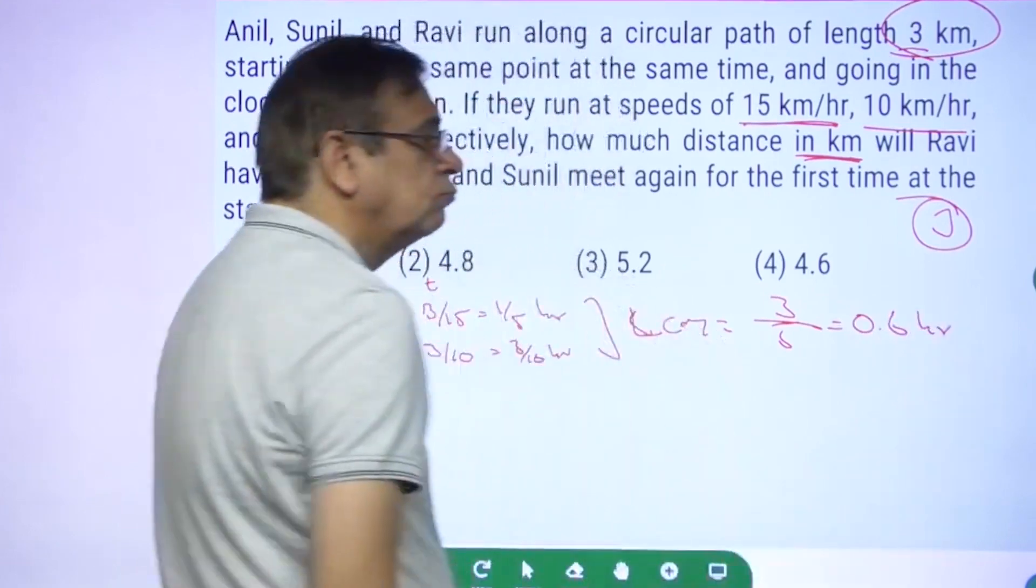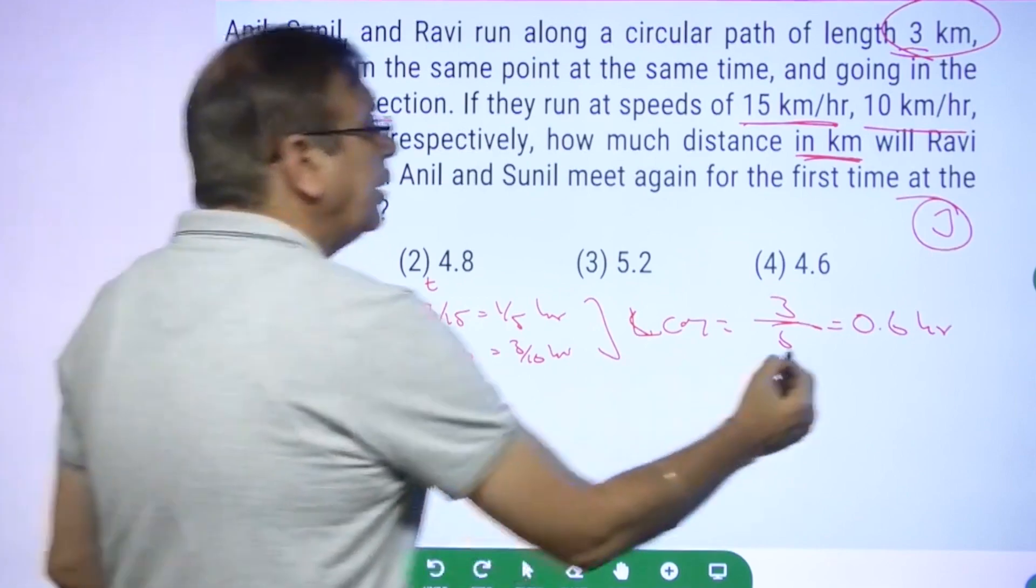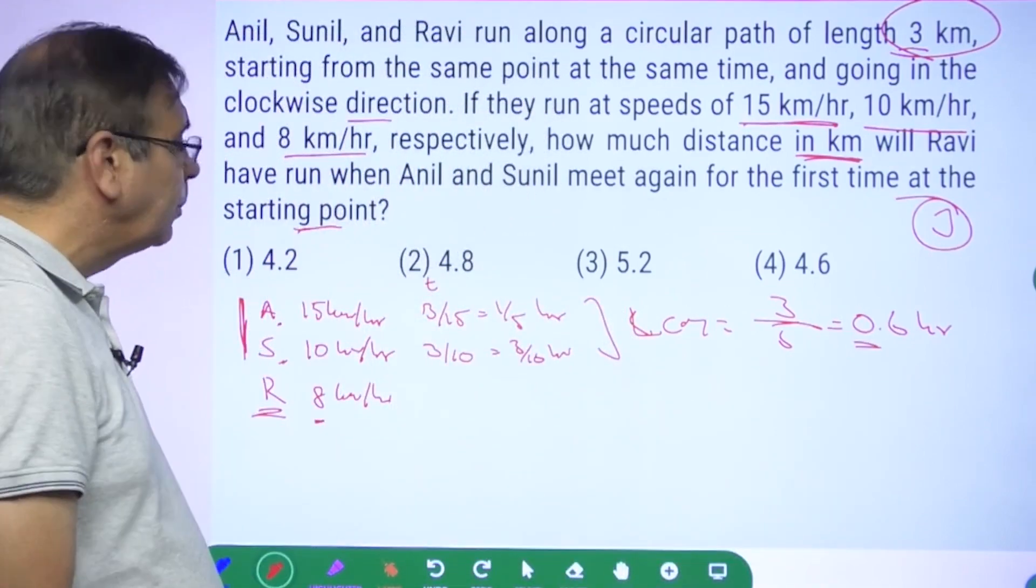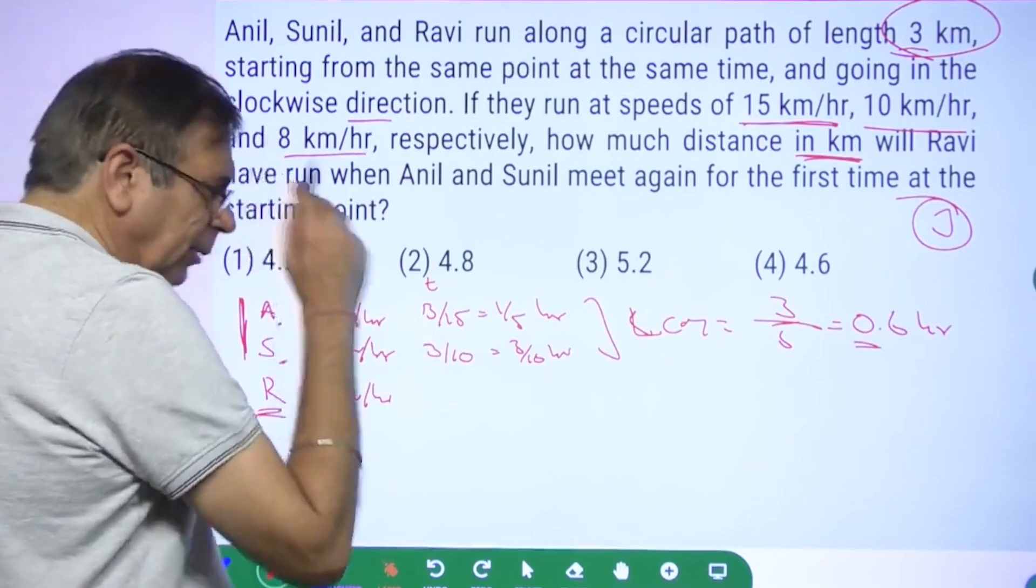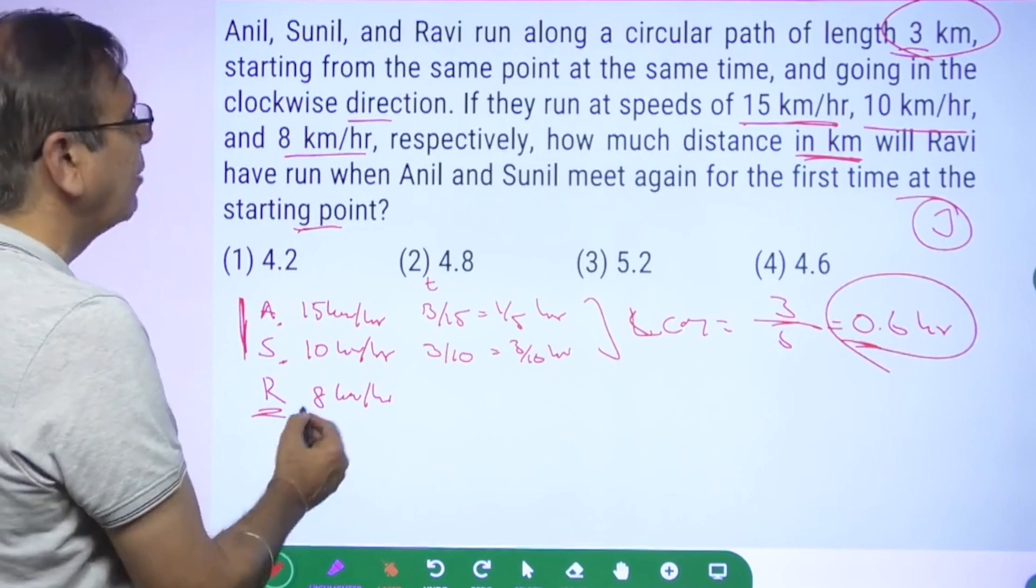So when they're meeting for the first time at the starting point, they have run 0.6 hours. What distance would Ravi have done? 8 × 0.6 = 4.8 kilometers.